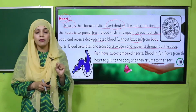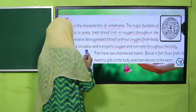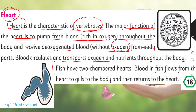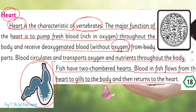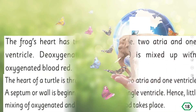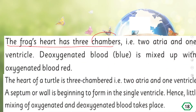Now let's talk about how vertebrates have different types of hearts. Fish have two-chambered hearts. Blood in fish flows from the heart to the gills and then to the body, and then returns to the heart. The fish heart has two chambers, and it sends blood to the gills where oxygen is taken up, then supplies that blood to all body parts, and then collects it again.